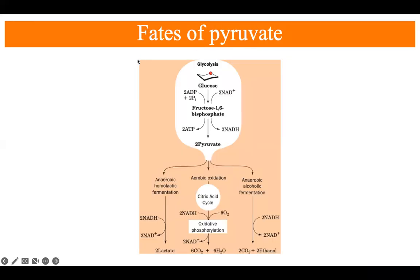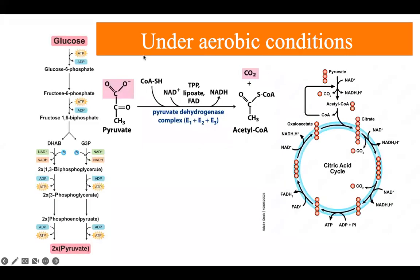Let's take an overview of what exactly happens to pyruvate in different conditions. In the presence of oxygen — that is, under aerobic conditions — pyruvate enters the citric acid cycle where it produces more energy. In the absence of oxygen, pyruvate converts into lactate. Also, in certain yeasts and microorganisms, a fermentation process takes place under anaerobic conditions where pyruvate is converted into ethanol.